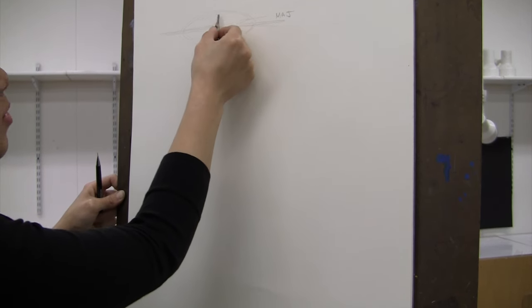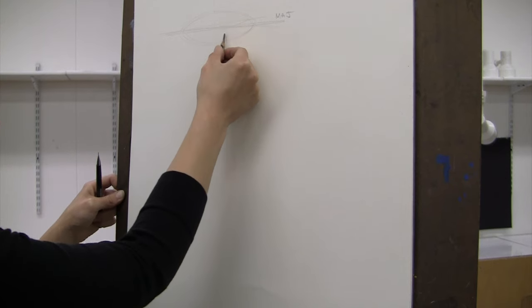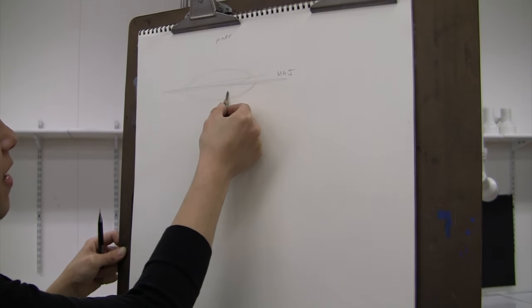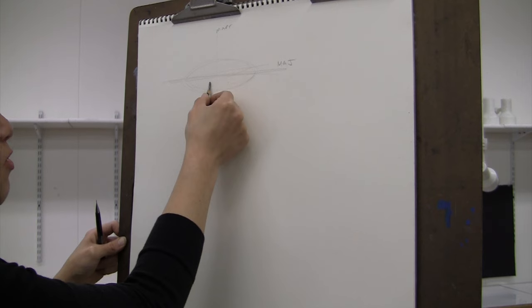And just remember that these help us establish symmetry. So this side is going to be perfectly symmetrical to that side, this will be perfectly symmetrical to that, and this will be perfectly symmetrical to that side.